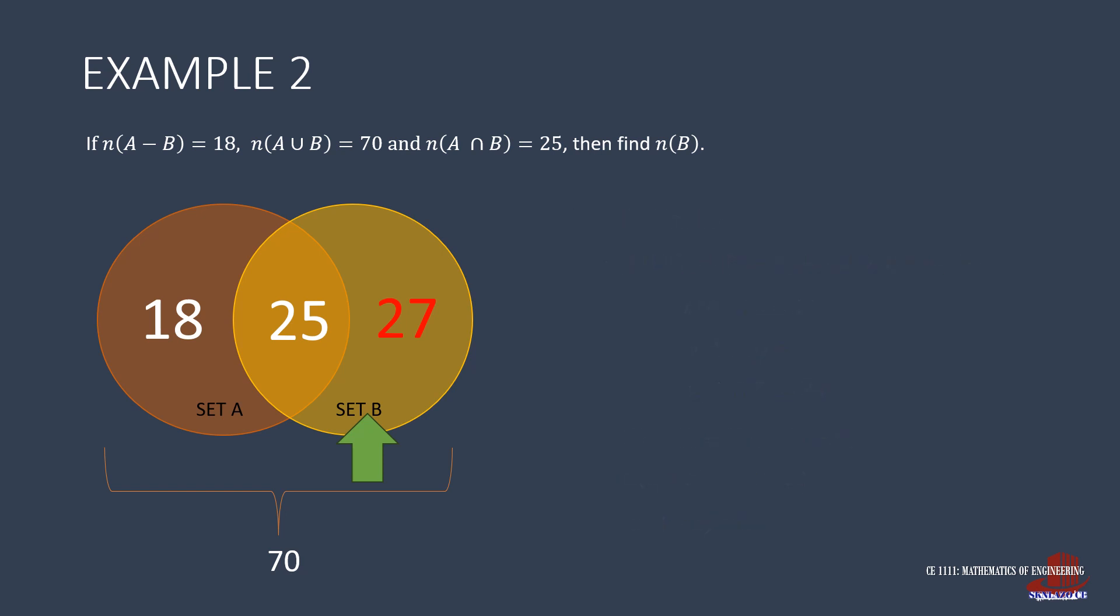Learning that the third part of the Venn diagram is 27, we can add all elements comprising set B, and that is 25 plus 27, which gives 52.